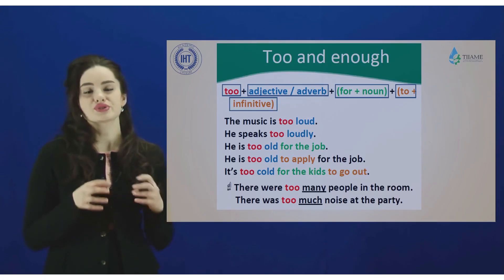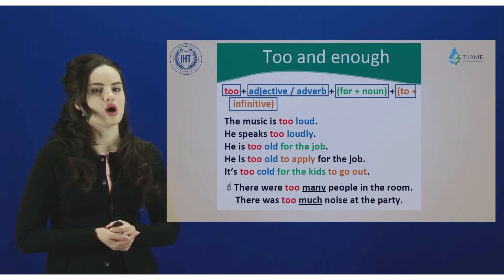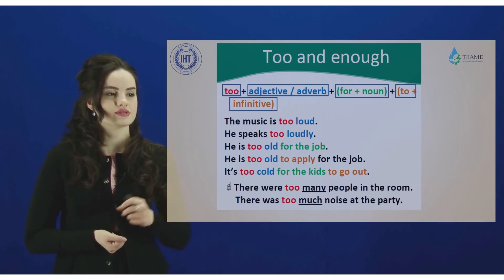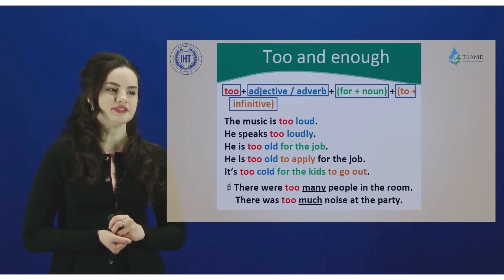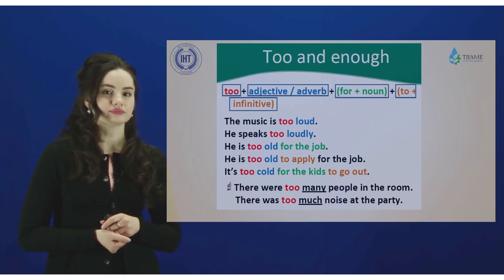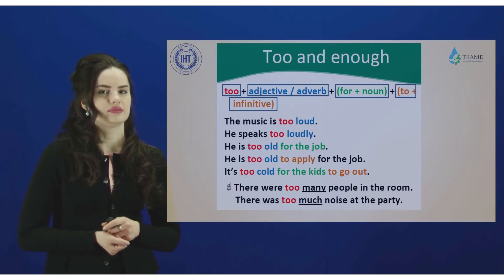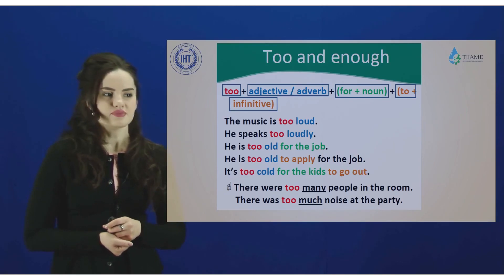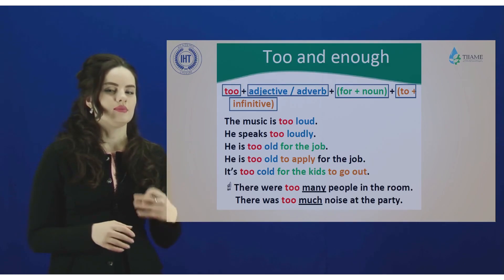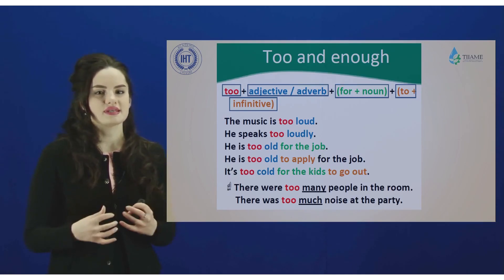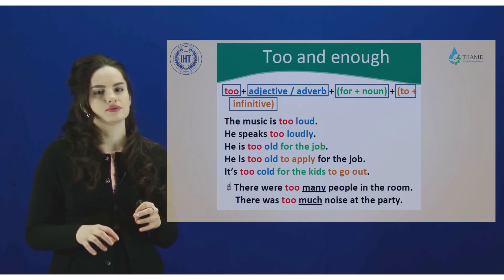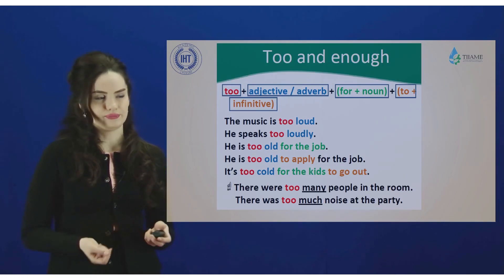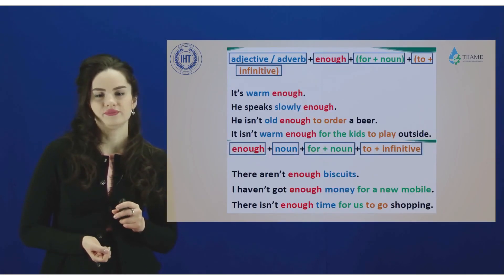Now 'too' and 'enough' — also some words used to put stress on certain details within a sentence. How to use them? Pay attention to their location inside the sentence. As you can see at the top of the slide, the structures are: too + adjective or adverb, too + noun, too + infinitive. For example: 'The music is too loud', 'He speaks too loudly'. Using 'too' emphasizes that something is too much, too strong, or too many.